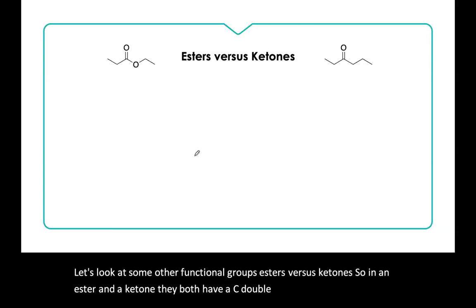Let's look at some other functional groups, esters versus ketones. So in an ester and a ketone, they both have a C double bonded O. Esters have a C single bonded O also. So let's look at two spectra.